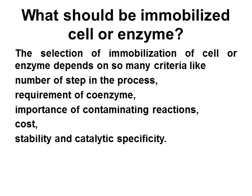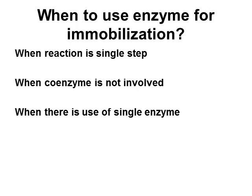What should be immobilized — cell or enzyme? The selection depends on many criteria, like number of steps in the process, requirement of coenzyme, importance of contaminating reactions, cost, stability, and catalytic specificity. When can we use enzyme for immobilization? When the reaction is a single step, when coenzyme is not involved, and when there is use of a single enzyme.